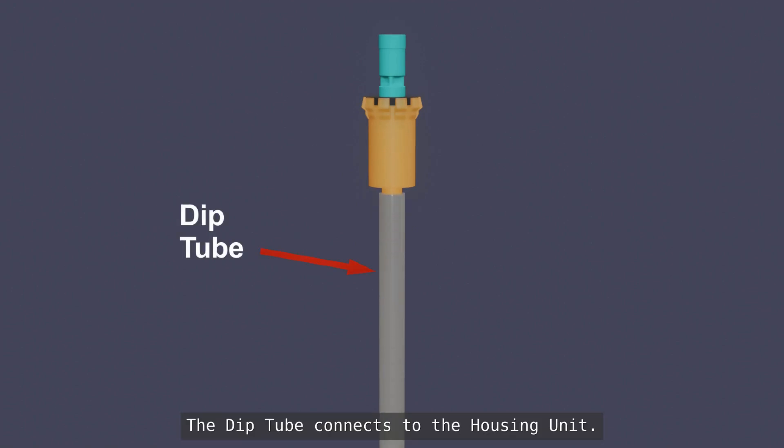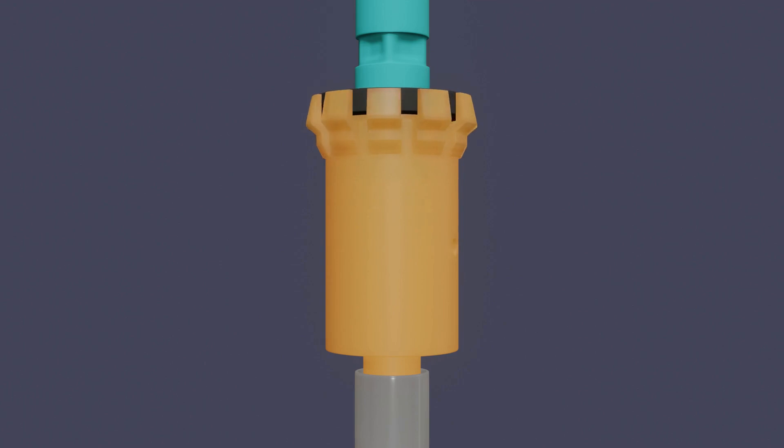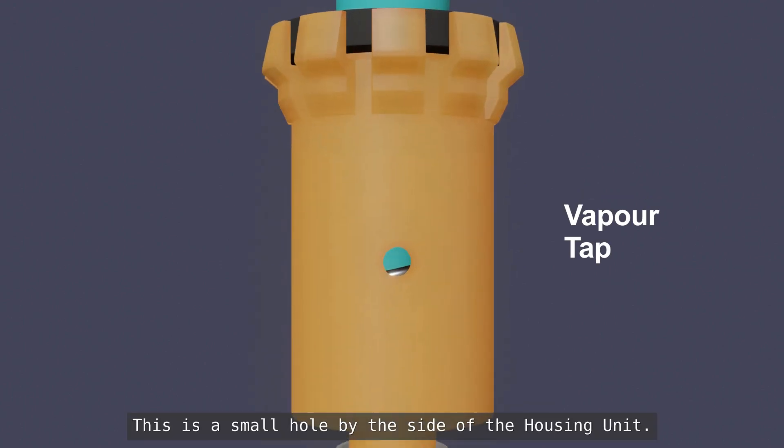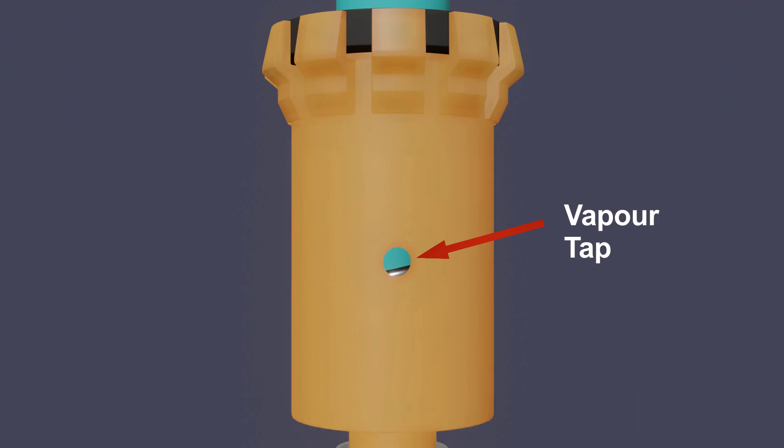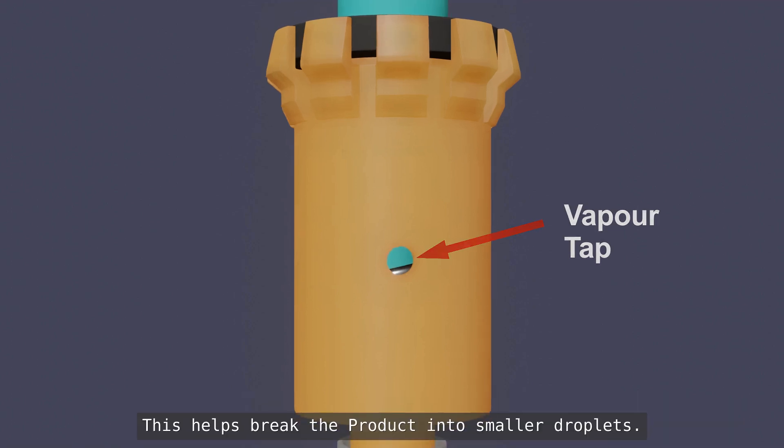The deep tube connects to the housing unit. Vapor tape. This is a little hole by the side of the housing unit. When the valve is open, it allows a small amount of the propellant vapor to enter and mix with the product. This helps break the product into smaller droplets.